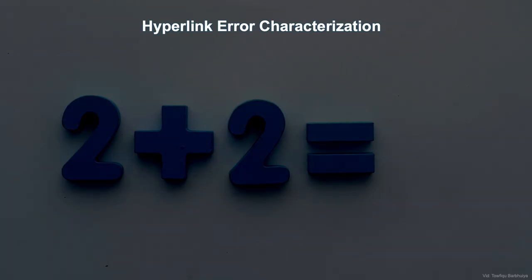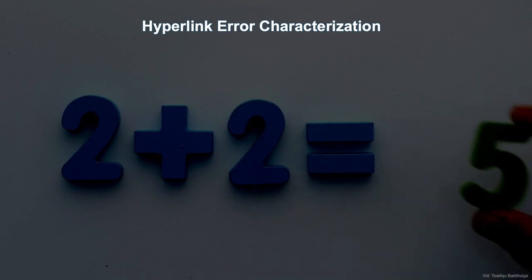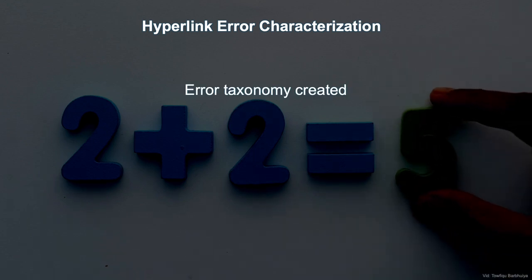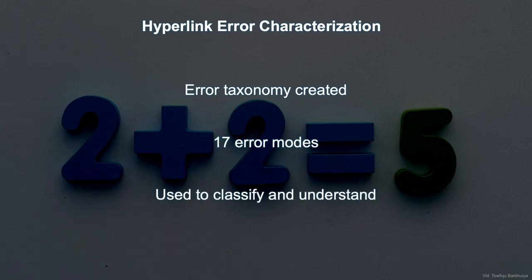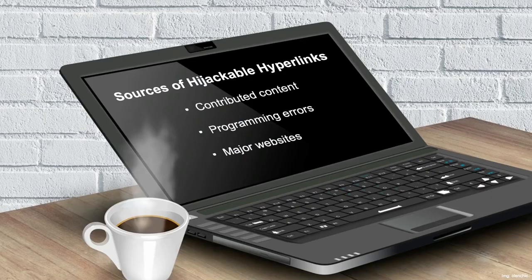The quantity of hijackable hyperlinks we encountered necessitated the creation of an error taxonomy of 17 error modes, which drove insights into how these links came to be. We also analyzed the sources of hijackable hyperlinks in aggregate and in some specific notable examples.